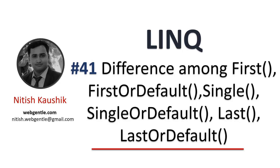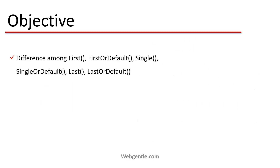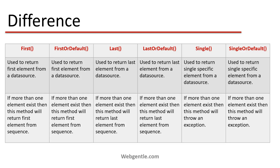Hi everyone, welcome to this new part of LINQ tutorial. In a few previous videos we have learned about multiple methods of the element operators. Now let's understand the difference between all the methods in a single video. We are going to learn about the difference among First, FirstOrDefault, Single, SingleOrDefault, Last, and LastOrDefault methods.